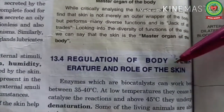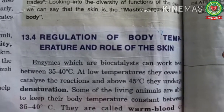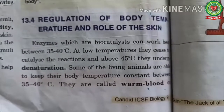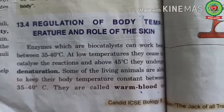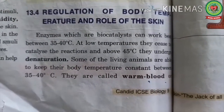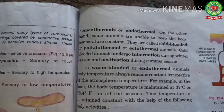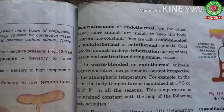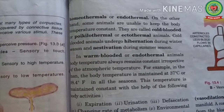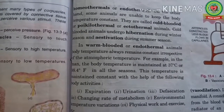Next topic is regulation of body temperature and the role of the skin. Enzymes are bio-catalysts working best between 35 to 40 degrees Celsius; below this temperature their activity ceases, and above 45 degrees Celsius they undergo denaturation. Warm-blooded animals are also known as homeothermals or endothermals, whereas cold-blooded animals are also known as poikilothermals or ectothermals. Cold-blooded animals undergo hibernation during winter and estivation during summer.